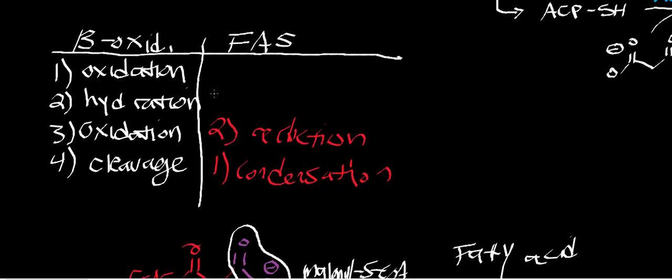For the third step of fatty acid synthase — pause and think about what the reverse step might be. If beta-oxidation did a hydration of an alkene, the reverse of an addition reaction to an alkene is a beta elimination. So this reaction is a beta elimination, or dehydration. In that step, you would lose water, whereas in beta-oxidation when you hydrated, you put in water — it's definitely the reverse.